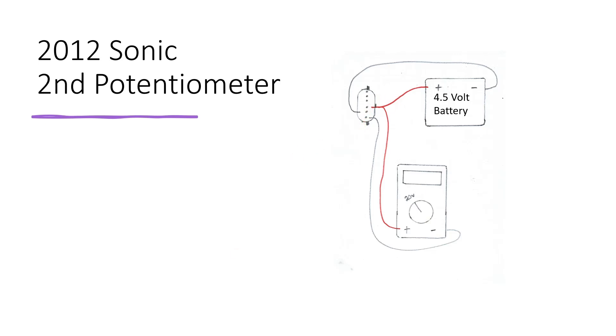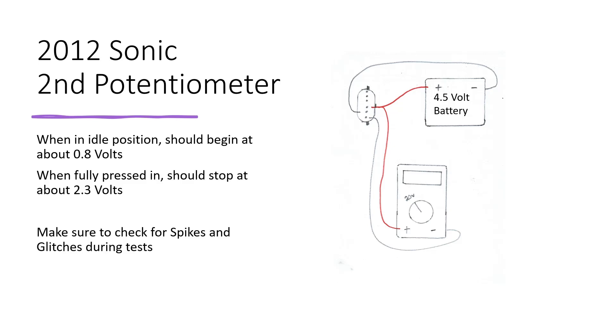After doing that, it's going to be reading 0.8 volts in the idle position. As you press down on the pedal itself it will be reading about 2.3 volts at the very end. Again, check for spikes and glitches during these tests.